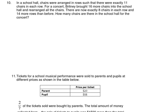In a school hall, chairs were arranged in rows such that there were exactly 11 chairs in each row — 1, 2, 3, 4, 5, 6, 7, 8, 9, 10, 11. We do not know how many rows there are, but we know that there are 11 chairs per row.